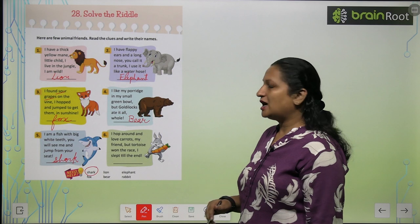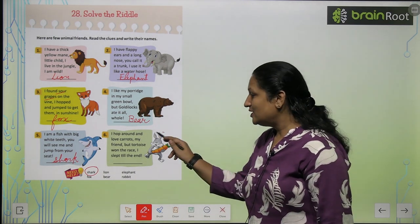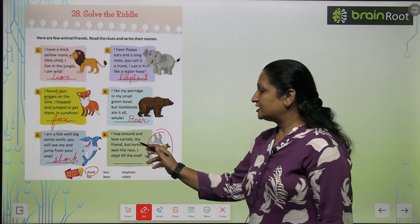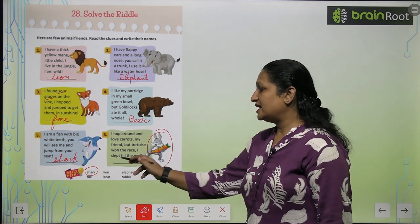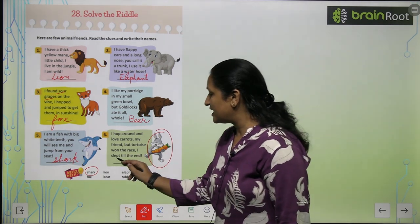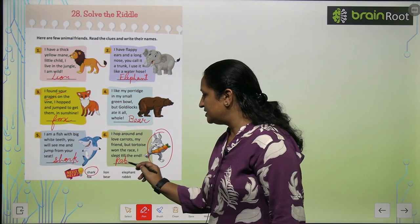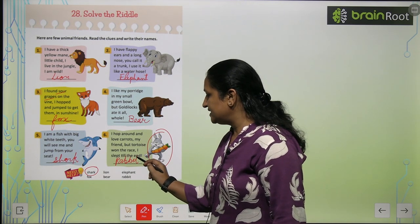I hop around and love carrots. Carrot kisko pasand hai, carrot toh rabbit ko pasand hai. But tortoise won the race, I slept till the end. Toh ye kiska hai? Ye hai rabbit. R-A-B-B-I-T, rabbit.